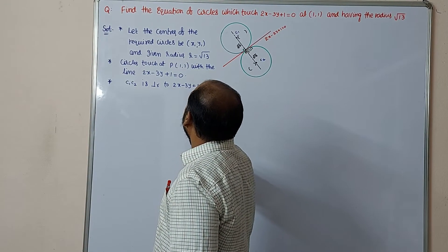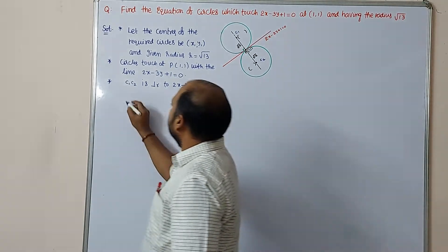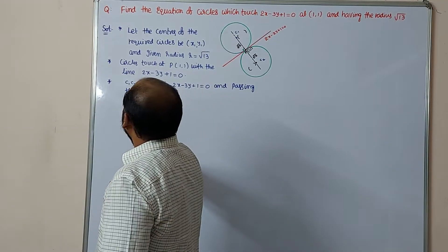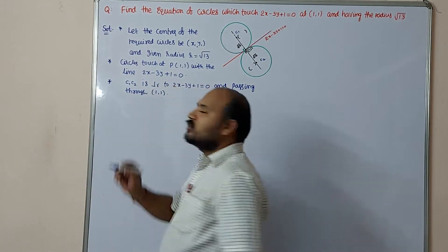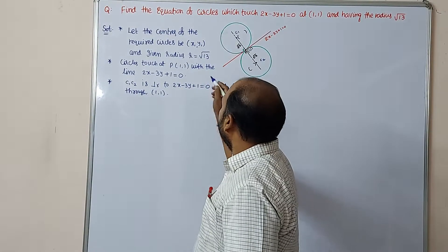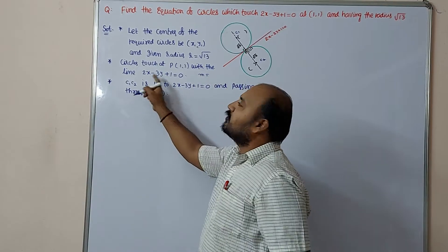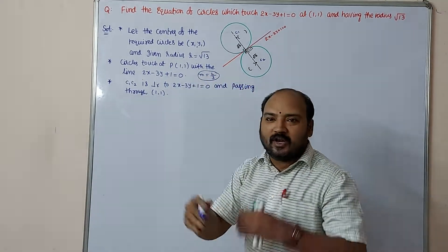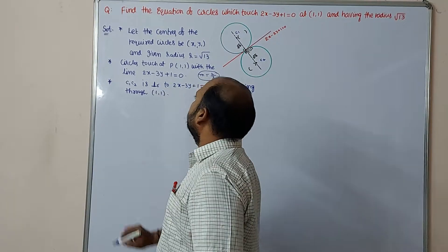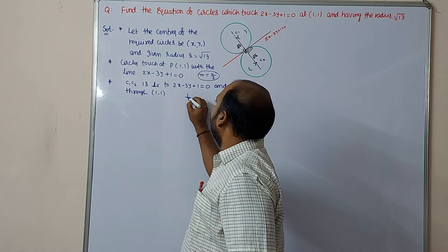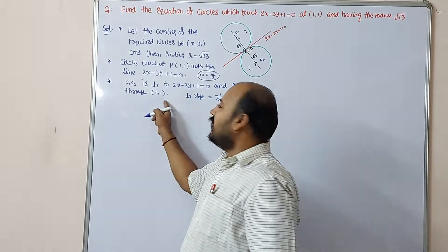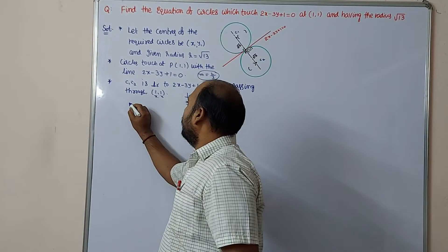C1C2 is perpendicular to 2x minus 3y plus 1 equal to 0, and it passes through (1,1). The slope of the given line is m equal to minus x-coefficient by y-coefficient, so m equals 2 by 3. The perpendicular slope is minus 1 by m, which gives minus 3 by 2. So the line of centers passes through (1,1) with slope minus 3 by 2.